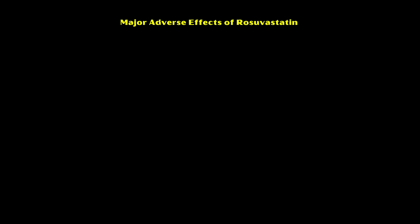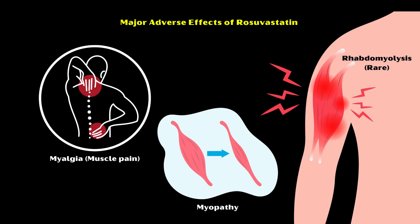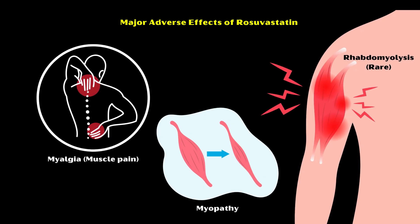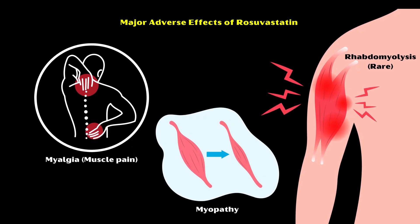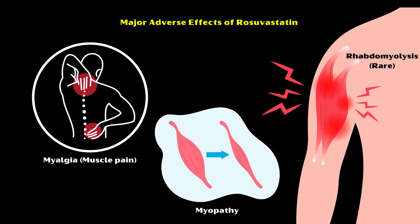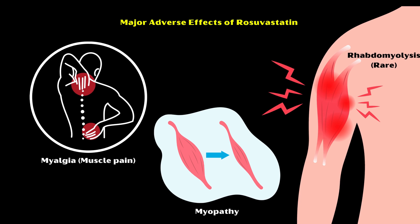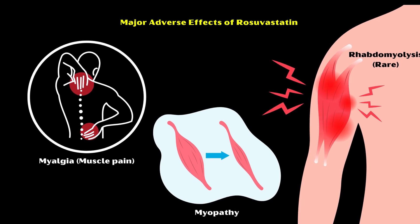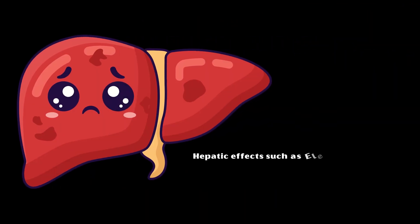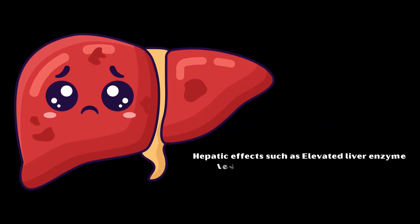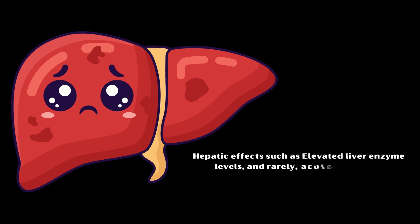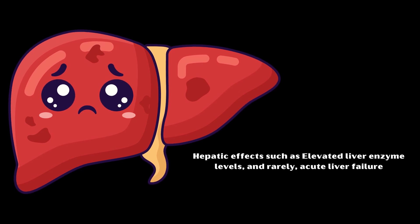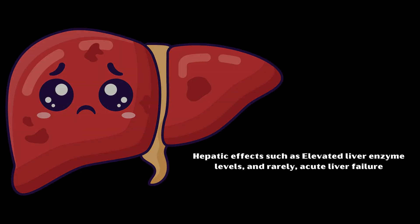Major adverse effects of rosuvastatin include musculoskeletal effects such as myalgia or muscle pain, myopathy, and very rarely rhabdomyolysis. Hepatic effects include elevated liver enzyme levels and, rarely, acute liver failure.